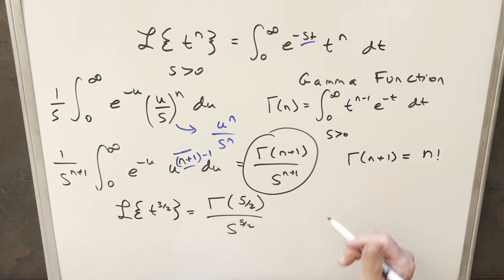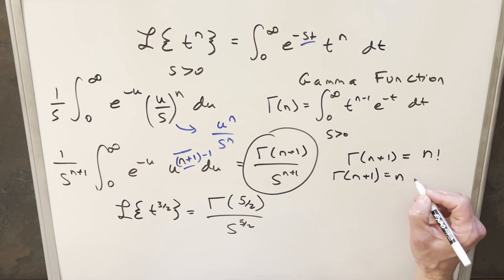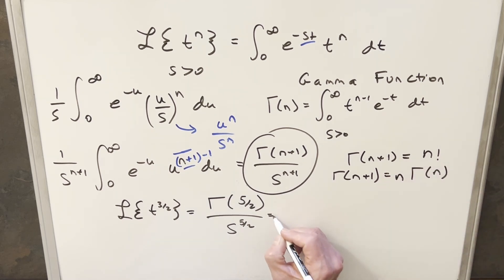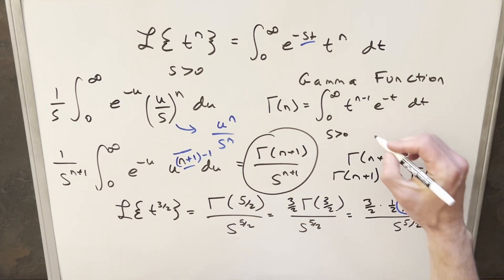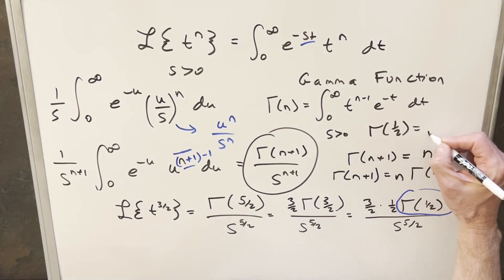But now for gamma of 5 halves, we can use a different formula. What I can do is we have a formula, really the same thing as this, but we can do it in terms of the gamma function. So we can write gamma of n plus 1 as n times the gamma of n. And so doing it this way, we can write gamma of 5 halves. I can write it as 3 halves times gamma of 3 halves. But then we can just repeat this over and over again. So I can write gamma of 3 halves as 1 half times gamma of 1 half. But what I like to do for these is just memorize one value, gamma of 1 half. And this value for gamma of 1 half is actually just the square root of pi.